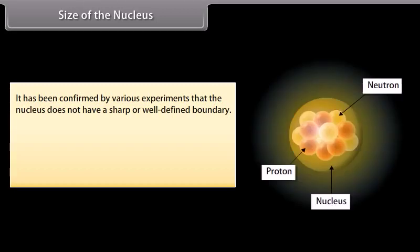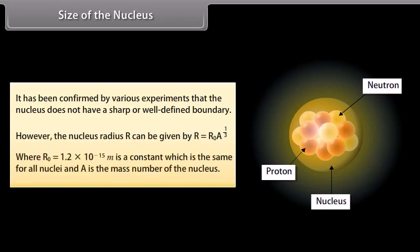Size of the nucleus. It has been confirmed by various experiments that the nucleus does not have a sharp or well defined boundary. However, the nucleus radius R can be given by R is equal to R₀ into cube root of A, where R₀ is equal to 1.2 × 10⁻¹⁵ M is a constant which is the same for all nuclei and A is the mass number of the nucleus.